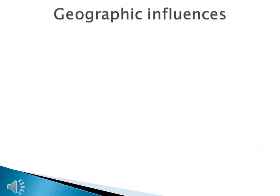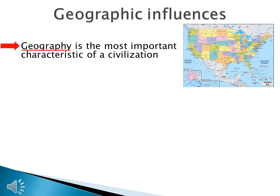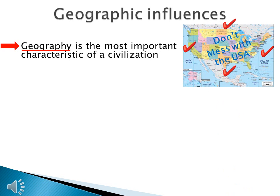When it comes to the characteristics of civilization, geography is the most important characteristic. To understand this concept, we only need to look at our own geography. Here's a map of the United States. Our country is surrounded by giant bodies of water and one giant landmass: the Atlantic Ocean to the east, the Pacific Ocean to the west, the Caribbean to the south, and Canada to the north. It's really hard for anybody to come from the rest of the world and mess with the United States — we are isolated because of our geography, and because of this, we were able to grow strong.